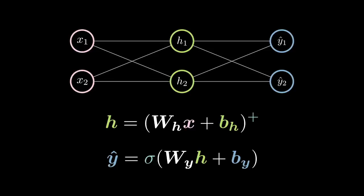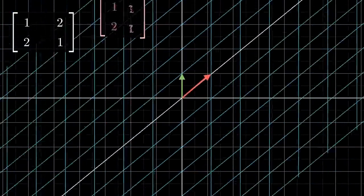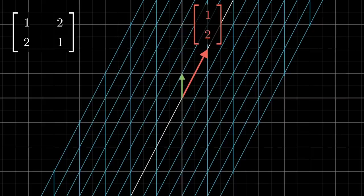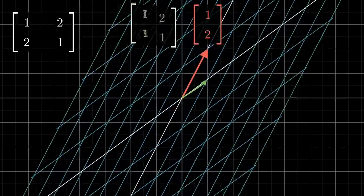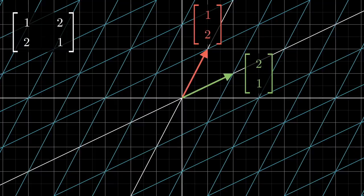For now, let's ignore the activation function, which if you remember provides non-linearity and just consider wx plus b. The way we view a matrix multiplied by a vector as a linear transformation is to place the unit vectors at the columns of the matrix. To start with, our unit vectors are 1 0 and 0 1. These are also called i hat and j hat. The first column in this matrix is 1 2, so we move the x unit vector i hat to 1 2. The second column in this matrix is 2 1, so we move the y unit vector j hat to 2 1.